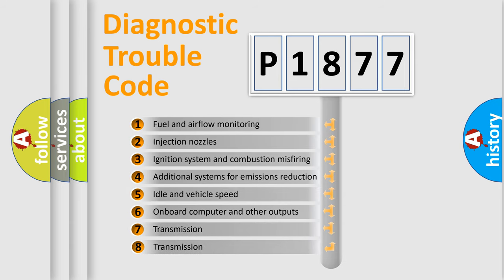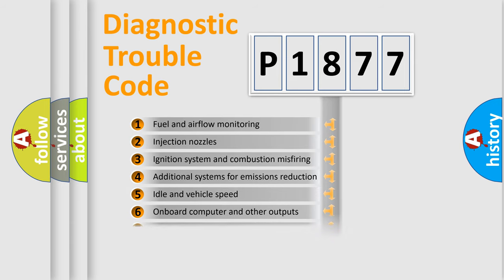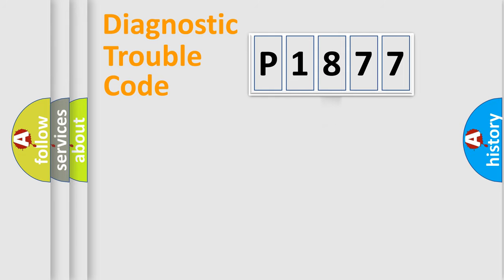The third character specifies a subset of errors. The distribution shown is valid only for the standardized DTC code.